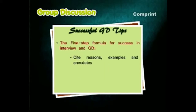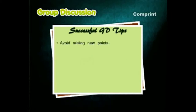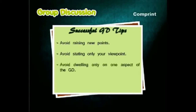Use examples and anecdotes, and make a confident ending. When summarizing a group discussion, keep the following points in mind: Avoid raising new points, avoid stating only your own viewpoints, and avoid dwelling only on one aspect of the group discussion.